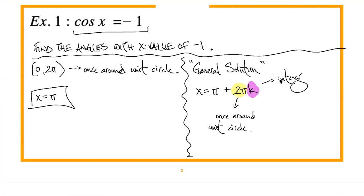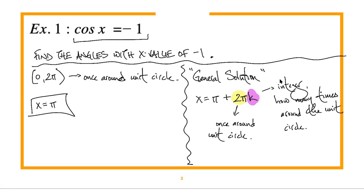The k tells you how many times around the unit circle. If I say go once around and find your answer, you say x equals π. But if I say give me the general solution, you say x equals π plus as many times around that unit circle as you want — that's the 2πk. Any questions about example one?